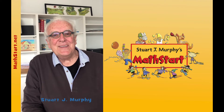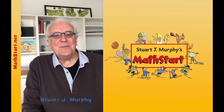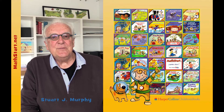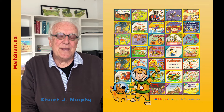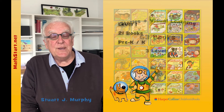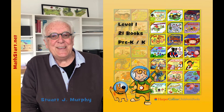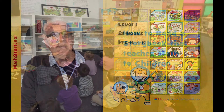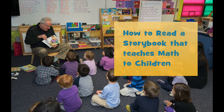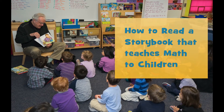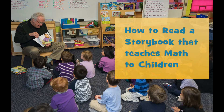Hi, my name is Stuart J. Murphy. I'm the author of the Math Start series. Math Start is a series of 63 books that teach mathematical concepts in the context of stories. 21 of those books are for pre-K and K. I'm going to talk about how you read a storybook that contains mathematical content to children and how to do that most effectively, using one of the pre-K/K books as an example.